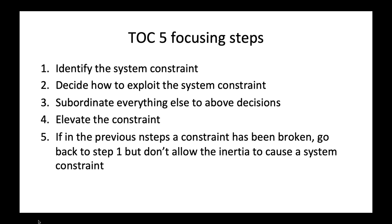As you break the constraint, if it's been resolved, you go back to step one and start over — but don't allow inertia to let a new constraint continue. That focus on throughput meant manufacturing organizations that studied and spent time on it were seeing a 70% increase in efficiencies with the same people and the same equipment. If you could get a 70% improvement in efficiencies in your organization, do you think your business could find things to do that would make you more competitive in the market?